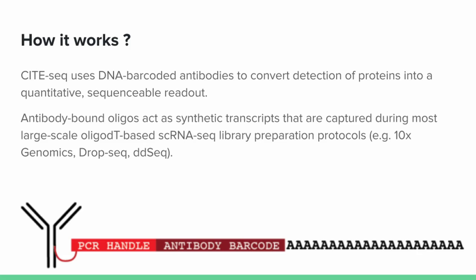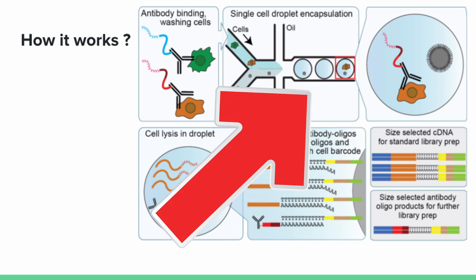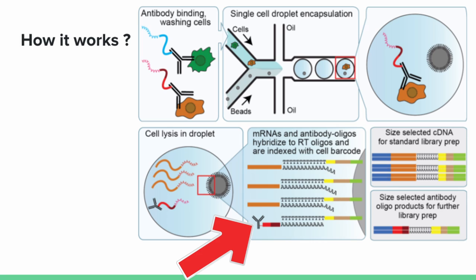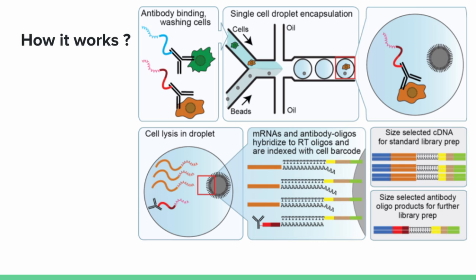This is where CITE-seq can actually be very useful. Using DNA-barcoded antibodies to convert detection of proteins into a quantitative, sequenceable readout. When a cell is being tagged during the droplet encapsulation process, it's also being added with this antibody. The antibody sticks to the cell and then you wash the liquid. The antibody that stays with the cell after the washing stage can then be picked up by the sequencing stage. So you have all the normal transcript readout from your normal RNA sequencing, plus another unique transcript that you know is coming from the antibody just added in.